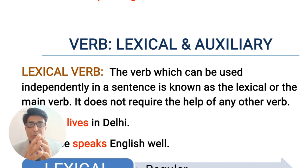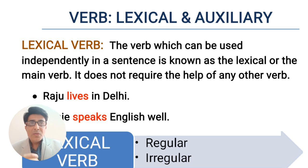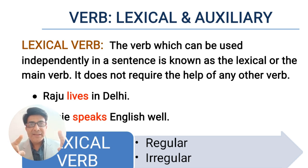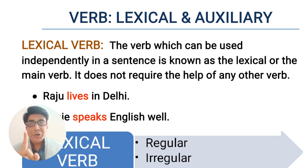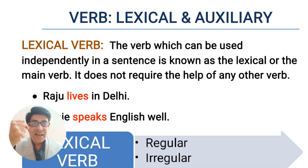So far, we have discussed two different categories of verbs: transitive verbs and intransitive verbs, and finite verbs and non-finite verbs. Now we discuss the last but very important category of verbs, and that is lexical verbs and auxiliary verbs. Verbs can be divided mainly into these two categories: lexical verbs and auxiliary verbs. The lexical verb is always used independently in a sentence — it does not take the help of any other verb. They are independent in the sentence.